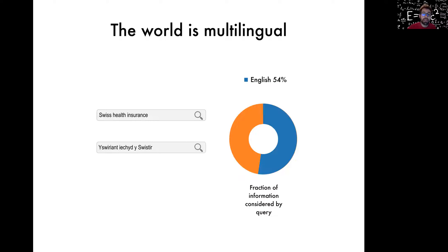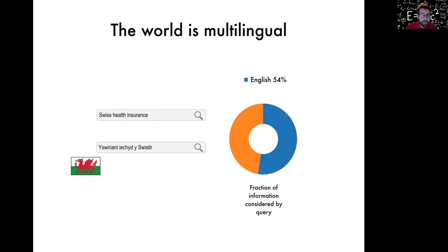But now imagine you don't speak English and only speak this weird language — let's make this interactive. Who knows which language this is? The flag is shown there. Someone is saying Mordor — no, this is not Mordor. This is Wales, so this is Welsh. Imagine someone only speaks Welsh and types a Welsh search query to learn about Swiss health insurance. The web is much less than one percent Welsh, so there would be much less information to source the answer from. Wouldn't it be amazing if you could type a search query in any language and get results in any other language? That's the motivation for this project.